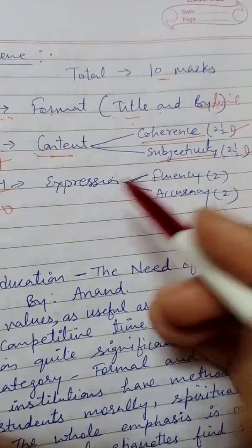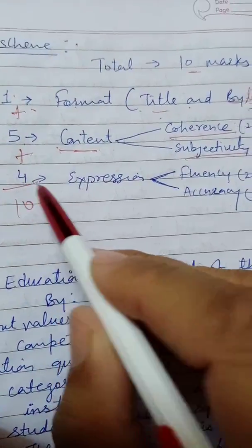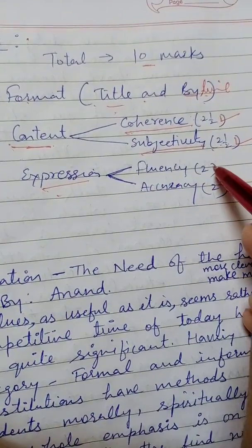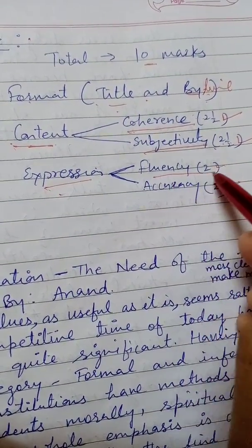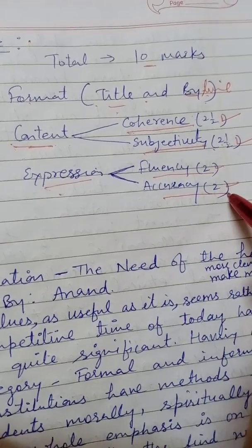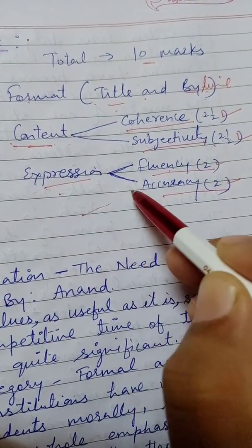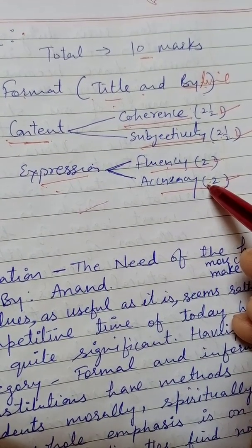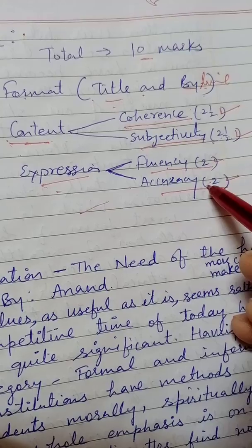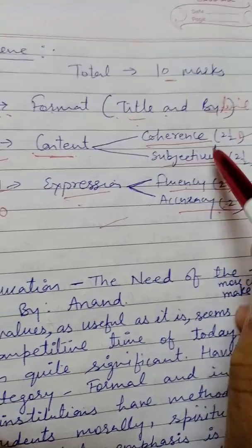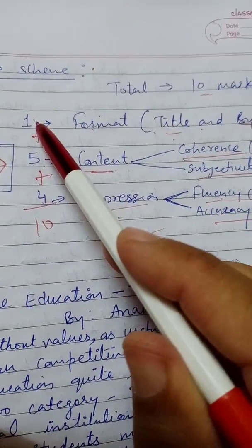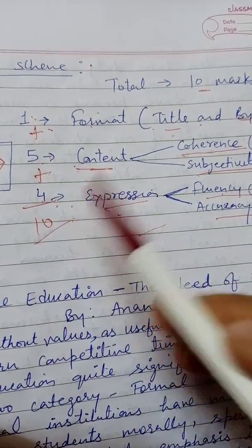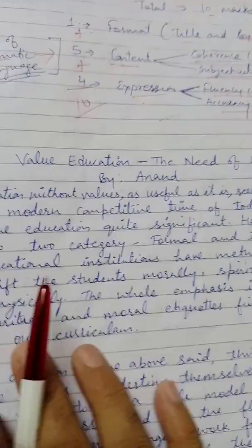The remaining four marks are for expression. The division is 2 marks for fluency and 2 marks for accuracy. Fluency refers to the flow in your language, and accuracy refers to grammatical errors, spelling errors, overwriting, and so on. So the total division is 1 plus 5 plus 4, equaling 10 marks.